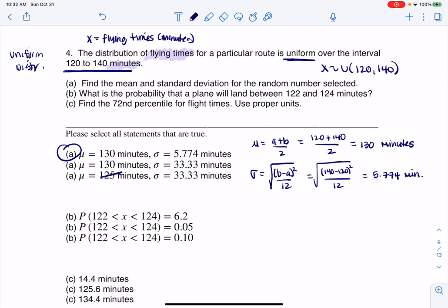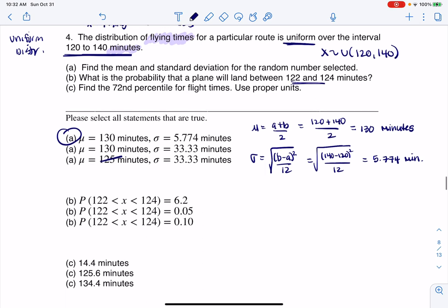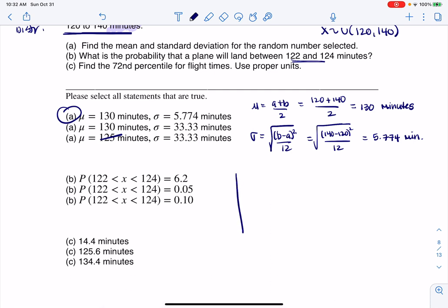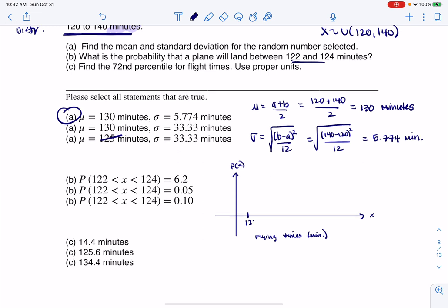And then it says, what is the probability that a plane will land between 122 and 124 minutes? So for me, I always like to draw a graph. I find that helpful. So let's go here, and we'll put probability. And this is going to be flying times, units are minutes. And you don't have to make a graph. I just, for me, I like to. So we go 120 to 140. That base, if I think about my base right now, if I take 140 and minus 120, that is going to be 20 minutes. So this height is going to be 1 over 20. I'll keep that in mind.